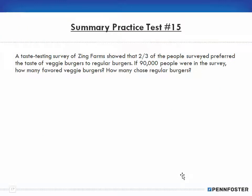Problem number 15: A taste-testing survey of Zing Farms showed that two-thirds of the people surveyed prefer the taste of veggie burgers to regular burgers. So immediately, here's what I'm thinking: two-thirds of the people surveyed preferred veggie burgers versus regular burgers, so that means one-third prefers regular burgers. I'm taking one and subtracting two-thirds to get one-third.